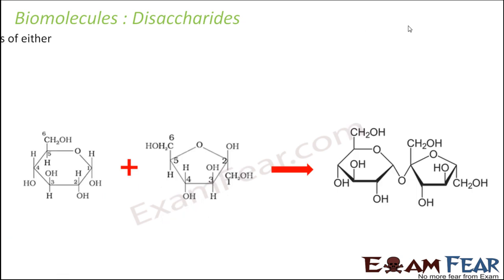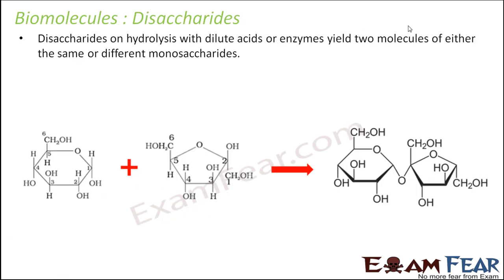When we talk about disaccharides, on hydrolysis they give two units of monosaccharides. An important point to note is that those two monosaccharide units can be the same or different. For example, in the case of sucrose the two units are glucose and fructose — so they are different. But in the case of maltose, both units are the same.